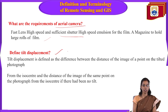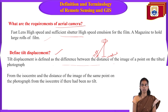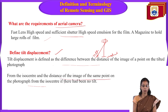Tilt displacement: tilt means the movement of the camera when the photo should be vertical but a slight tilt occurs. This tilt is defined as the difference between the distance in the image and the point on the tilted photograph from the isocenter.